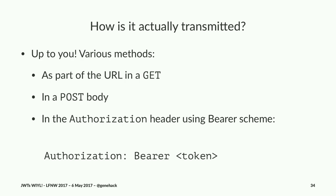You can send a JWT different ways: you can put it in the URL as part of a GET request, send it as a key in a POST body, or use the HTTP Authorization header with the bearer scheme — so you'd have a header that says 'Authorization: Bearer' and then the token, transmitted as part of the HTTP request.